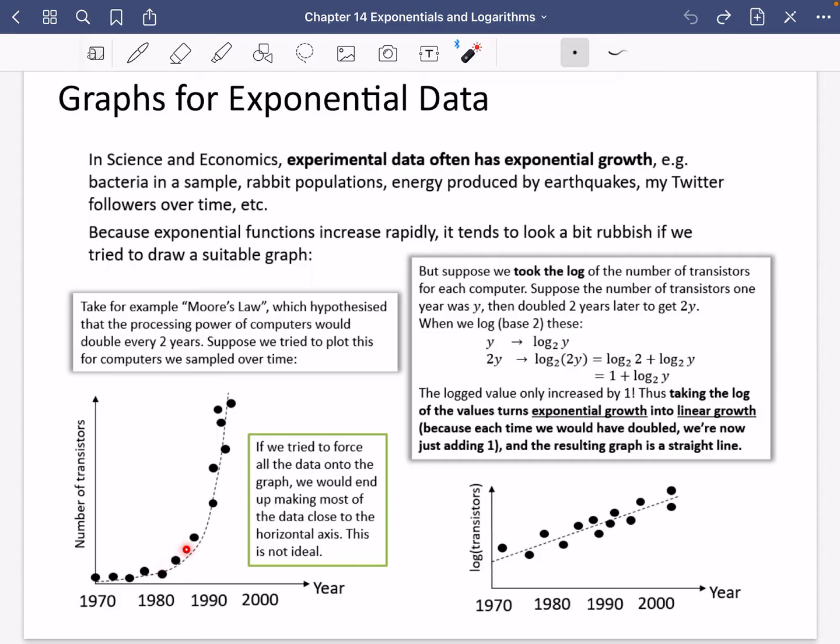Well, each time we're going across a year, in theory, it's going to double. So actually, the next year we go across, it's going to be up here. And the next year, it's going to be all the way up at the top of the page. So what happens is, we try to force all the data on one graph, we end up making most of the data be close to the horizontal axis. And this isn't very clear, because we lose a lot of that information. And it's a lot harder to do mathematical calculations on exponential things.